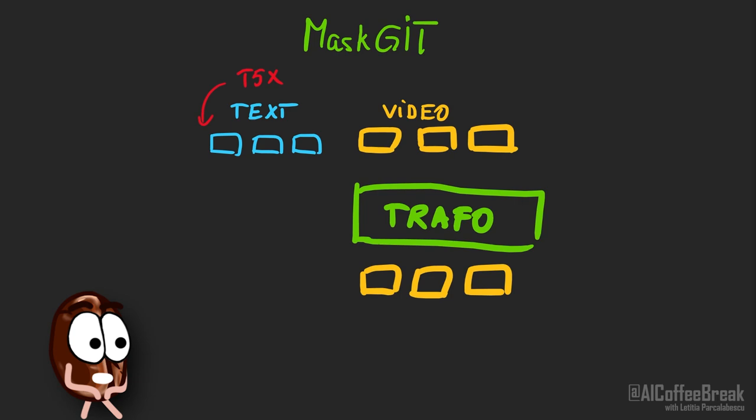Then the video input are the video tokens as produced by CViViT. You see the role of CViViT — basically, this MaskGit transformer can work with very low dimensional semantic representations of video. During training,